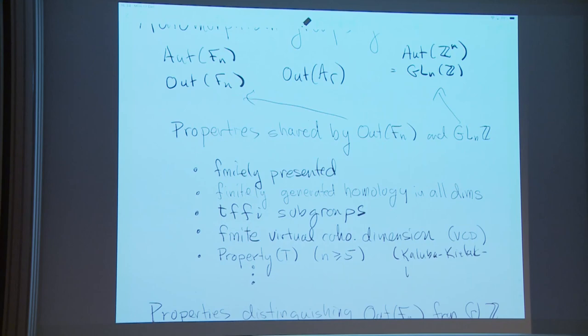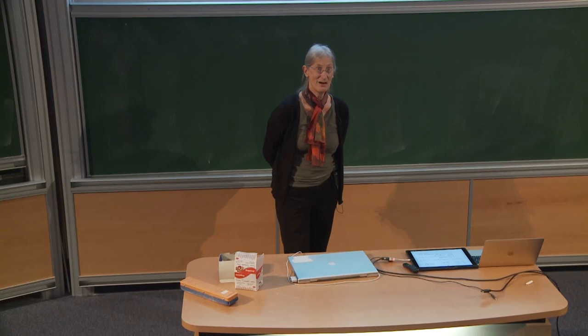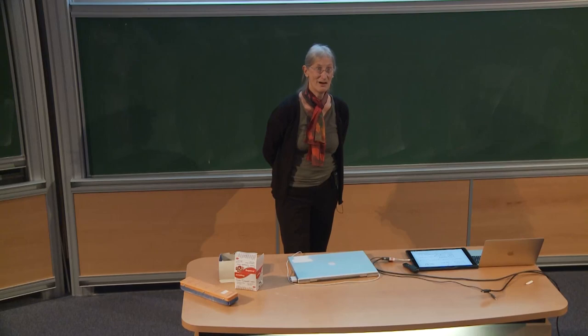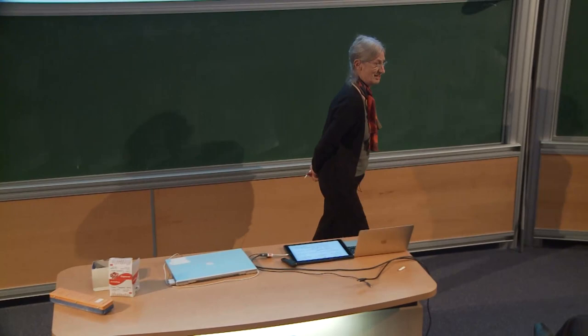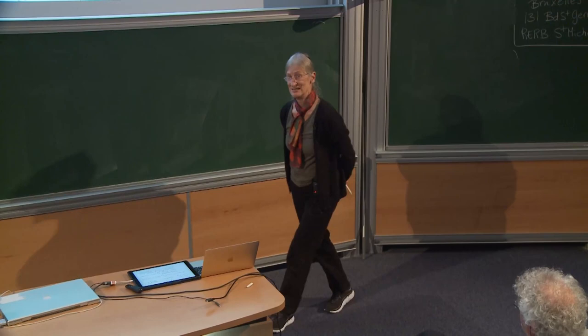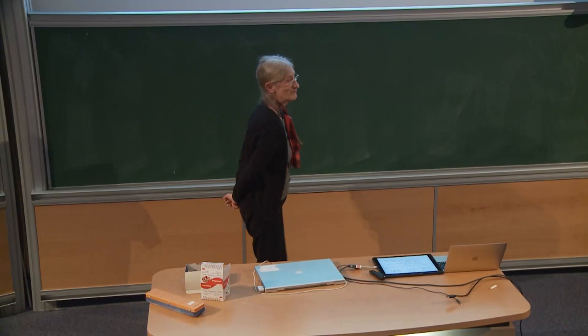Both of them have torsion-free subgroups of finite index, so the cohomological dimension of those subgroups is finite. This is big news — this is basically Kaluba, Kilek, and also Ozawa. If you read Alain's book about property T, there's a section at the end where he has a list of open problems. Number one on the list is: does Out(Fn) have property T? I wish I could be standing here telling you the proof that Out(Fn) has property T, but you have to invite those guys instead.